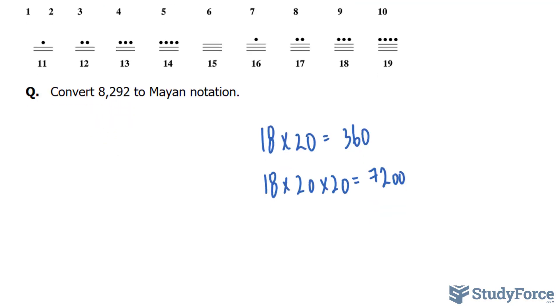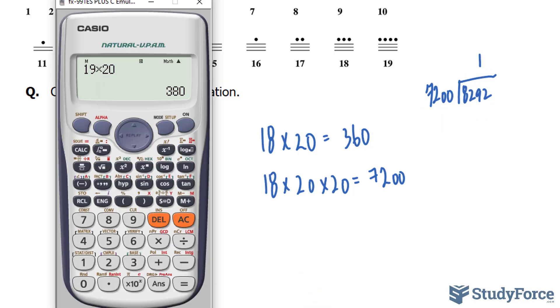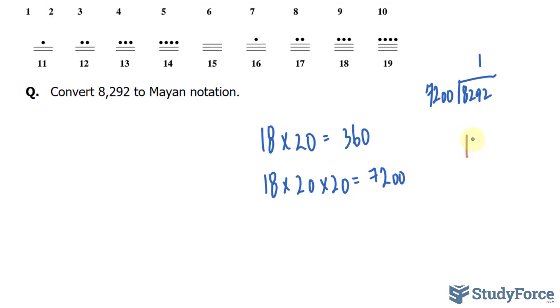So we'll take 7,200 and divide it into this number. Dividing 8,292 by 7,200, you should end up with 1. One 7,200 fits into this number as a whole. Taking 8,292 and subtracting 7,200, we get 1,092. And I'll explain why that's important.